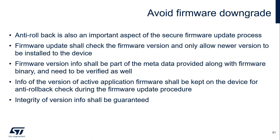Anti-rollback is also an important aspect of the secure firmware update process. Firmware update shall check the firmware version and only allow a newer version to be installed on the device. Firmware version info shall be part of the metadata provided along with the firmware binary and needs to be verified as well. Information about the version of the active application firmware shall be kept on the device for anti-rollback checks during the update procedure. The integrity of the version info shall also be guaranteed.